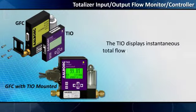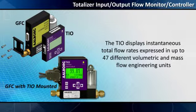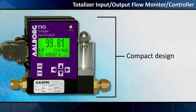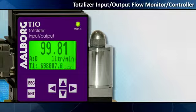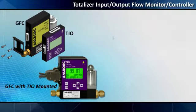The TIO displays instantaneous total flow rates expressed in up to 47 different volumetric and mass flow engineering units. The compact design makes it ideal for field use or for mounting with a unit or on a wall. The 13-millimeter digits on the display are always easy to read, and it's fully user-programmable.